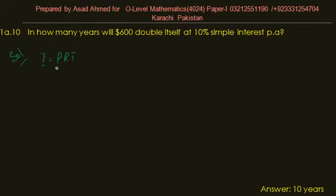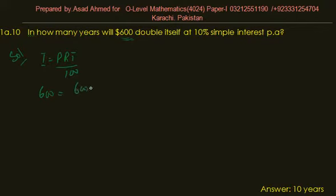We want to double the amount, which means we want $600 as simple interest, so that at the end it becomes double. So I would be 600, the principal amount is 600, the rate is 10, and the time period is to be determined. The 100 is for the percentage.